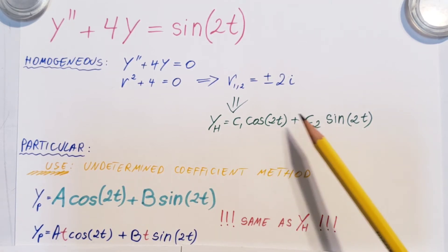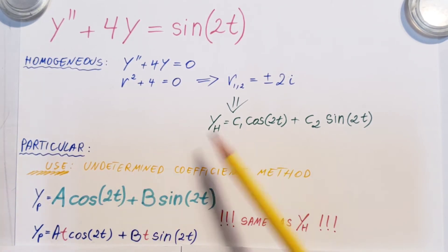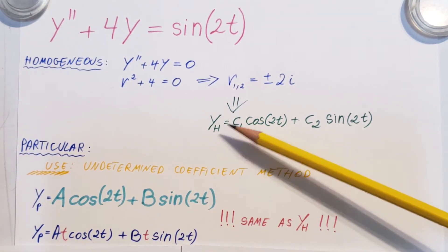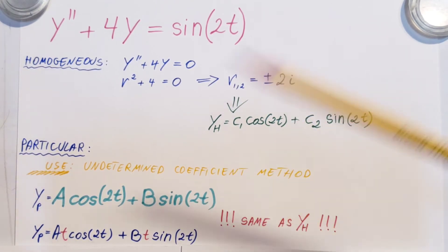So, we have this and in order to make it different looking, we will multiply with a t. If we had a t in it already, then t squared. So, whatever it is, you need to make sure that what you get here is different than yh. Okay, we don't want to find the same thing again.